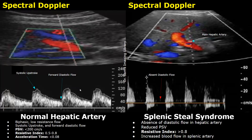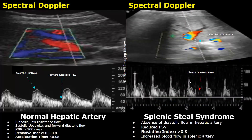There is no diastolic flow seen. Resistive index is measured by the formula: PSV minus EDV (end-diastolic velocity), divided by PSV. Since EDV is zero, the resistive index will be elevated — it will be more than 0.8. Here is a different case of splenic steal syndrome: the PSV is reduced and there is absence of diastolic flow, so the resistive index will be elevated.